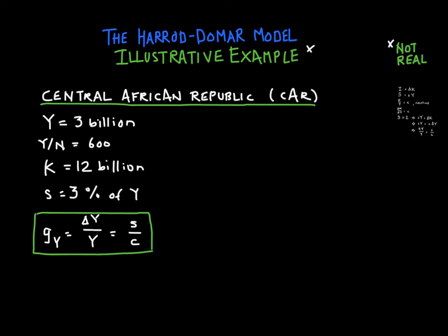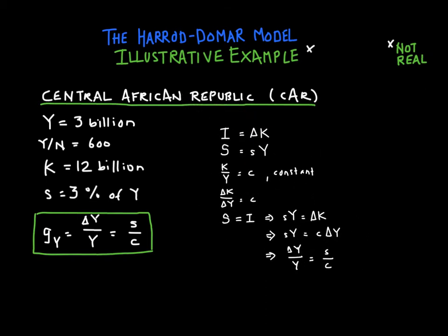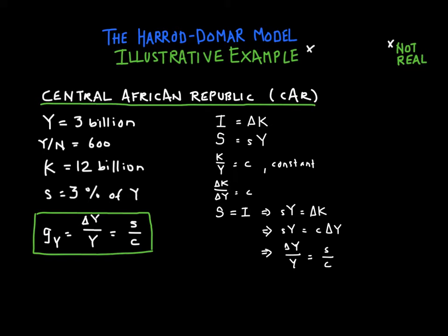We have our Harrod-Domar equation, which says that the growth rate of output — the change in output divided by output — is equal to the savings rate divided by the capital-output ratio. What we're assuming here is that investment is always going into an increase in capital, so whatever we invest goes into increasing the capital stock. We assume that the savings rate is a constant proportion of output, here equal to 3% of output. And we assume that the capital-output ratio is always equal to C and always constant, so the change in capital stock divided by the change in output will also be constant.